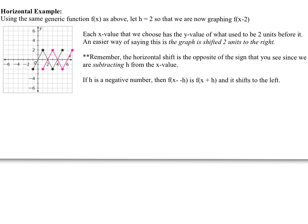Now let's do a horizontal example using the same generic function — the same zigzag. Let h equal 2. So if it says f of x minus 2, inside the parentheses it says minus 2, and it's going to shift 2 units to the right. It's kind of confusing at first because it says minus 2 and you think negative 2 goes to the left. But because it's minus h in your generic function, it's always going the opposite of what the sign says. So if I say x minus 2, I'm going 2 units to the right, and the whole thing gets shifted 2 units to the right.